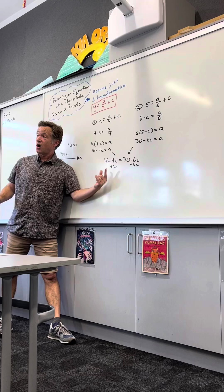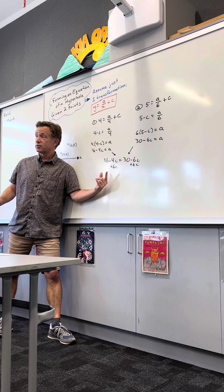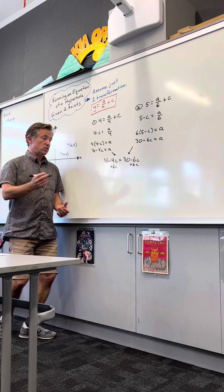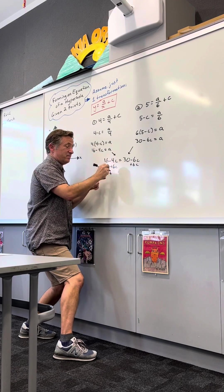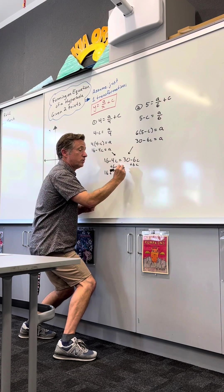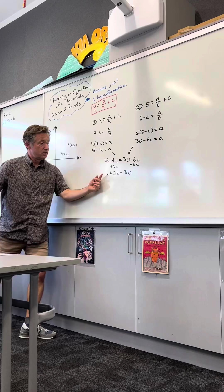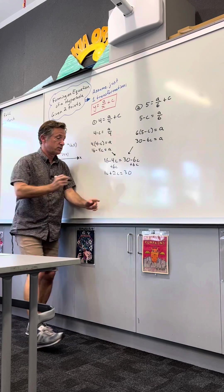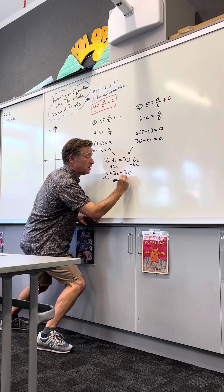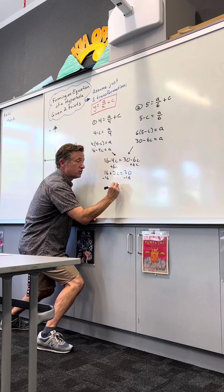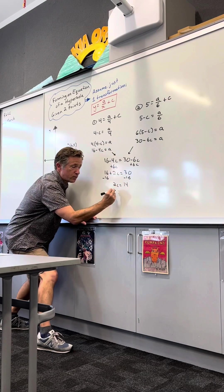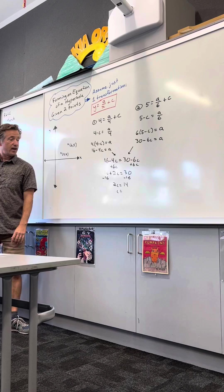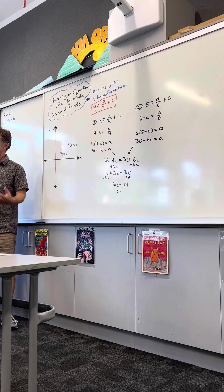Plus 6c plus 6c. Mr. Riccardi usually likes to keep the variable term positive because it's just a bit cleaner that way. So I get 16 plus 2c equals 30. Subtract 16 from both sides. And I get, running out of space, I get 14. 2c equals 14. And finally, I get c equals 7.